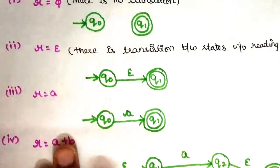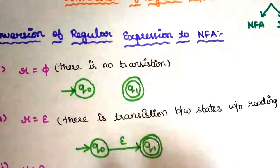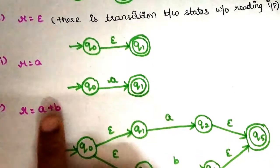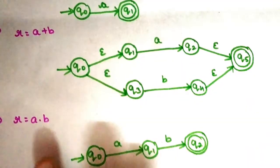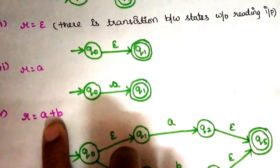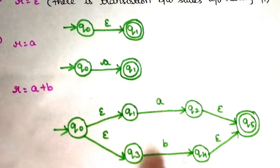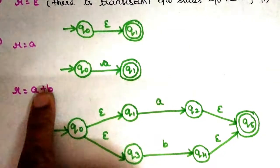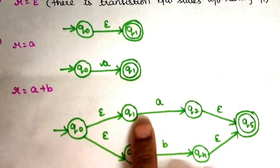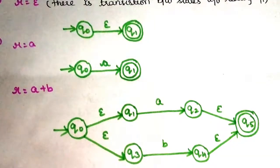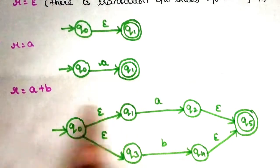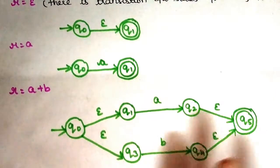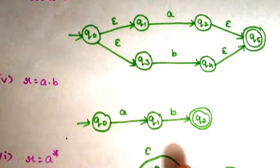Let's look at r equal to a plus b. There are three operations in regular expressions: the first is union operations, the second is concatenation, and the third is closure. So for union operations in regular expressions, this gives us a finite automata structure. That means A plus B — if you construct a finite automata for union operations, this is the structure.